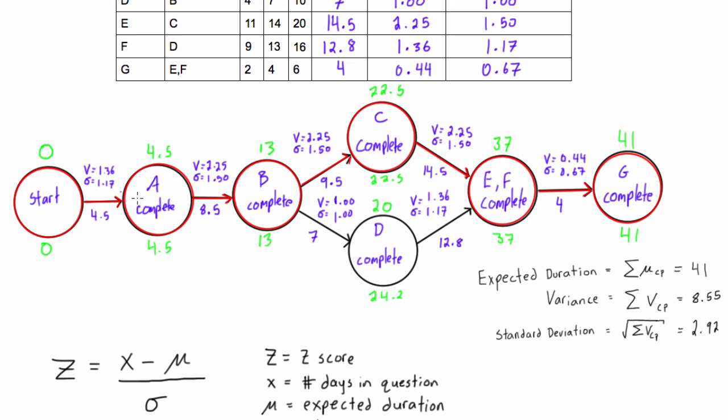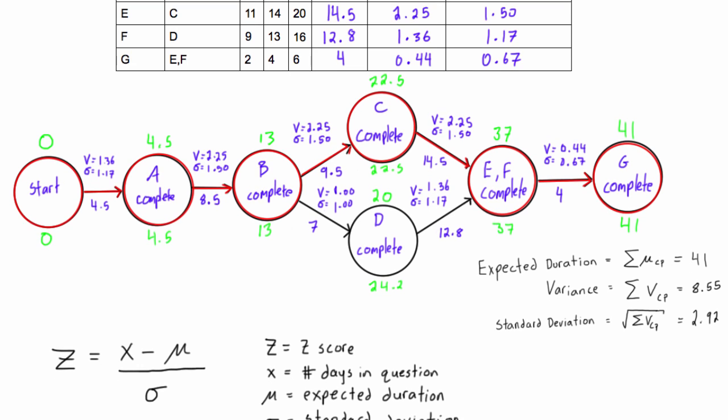We found expected duration by summing up the expected durations along the critical path. We found the variance by summing up the variances along the critical path. And because of the central limit theorem, we can't sum up the standard deviations along the critical path. So we just take the square root of the project variance and that gives us the standard deviation.